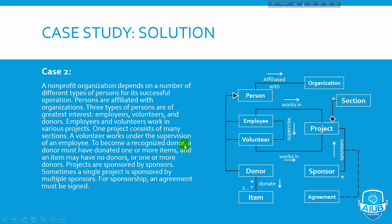To become a recognized donor, a donor must donate one or more items — Donor donates Items, with multiplicity one or more. An item may have no donors or one or more donors. Projects are sponsored by sponsors — projects can be sponsored by multiple sponsors.